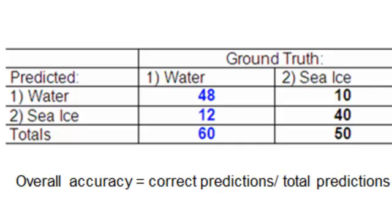From our last session, you saw it's pretty easy to come up with a raster. But the question is, how accurate is it? Here's an example of what's called an error matrix, which is typically used to assess the accuracy of classes. We have a classified raster where one represents water and two represents sea ice.